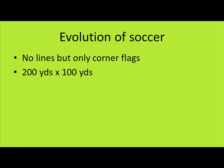Before, the soccer field — or the pitch — had no lines on it at all. It only had flags to indicate the four corners. The original soccer pitch was huge: 200 yards by 100 yards. So a lot has changed since the 19th century in terms of the field, the referees, and the laws.